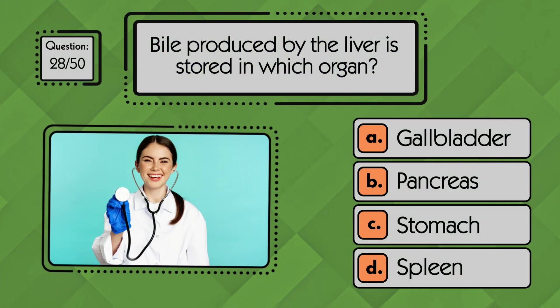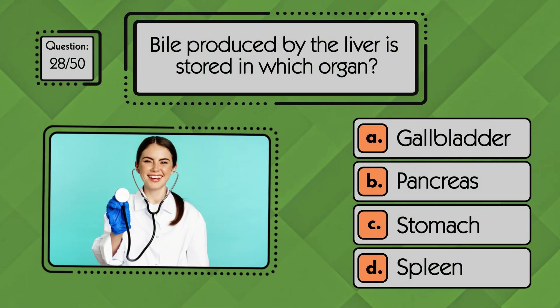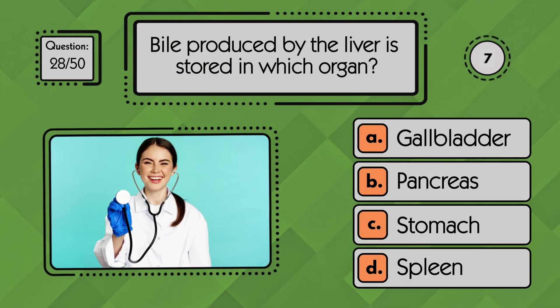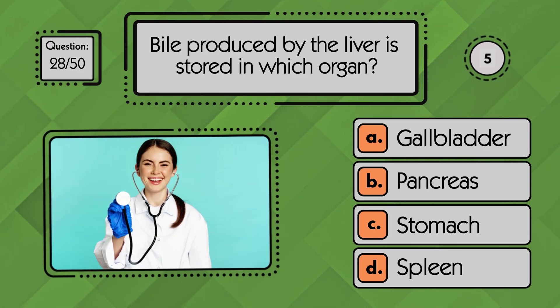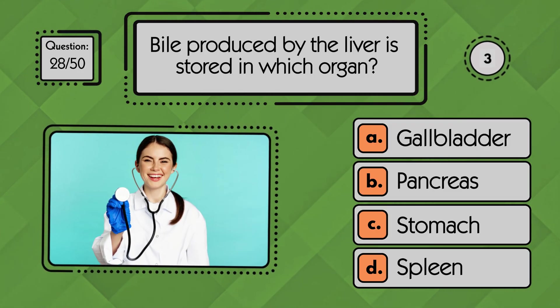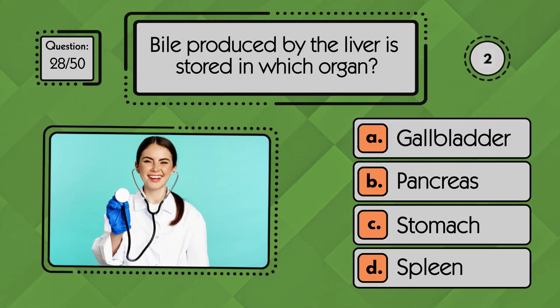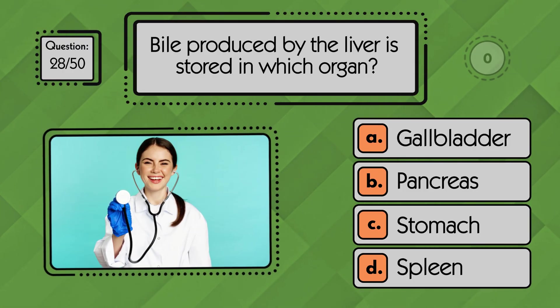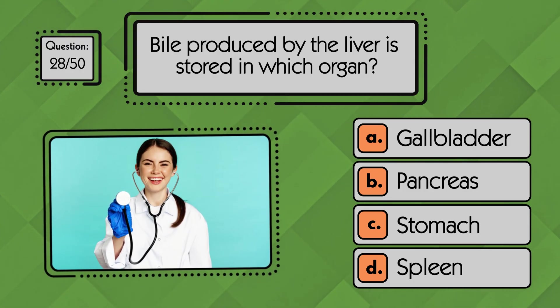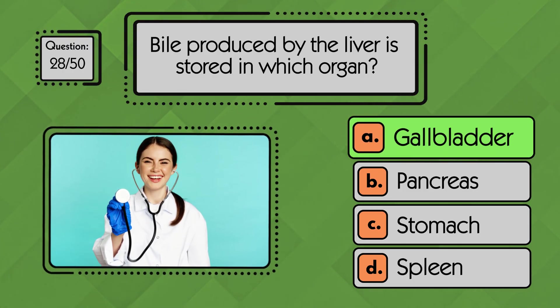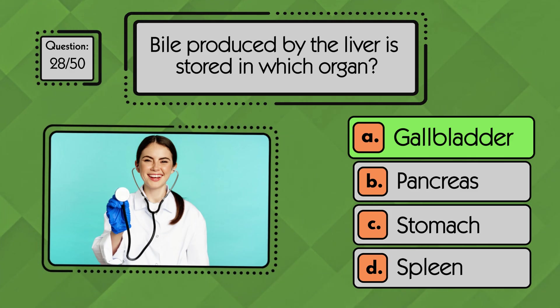Bile produced by the liver is stored in which organ? Bile produced by the liver is stored in the gallbladder until it is needed for digestion.